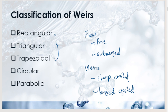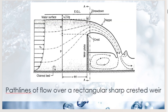Now let's discuss standard rectangular weirs without end contraction. The specifications include: (1) the upstream face of the weir plate must be vertical and smooth; (2) the crest edge shall be level with a square upstream corner and narrow enough so water doesn't touch it again after the upstream corner; (3) the sides of the flume shall be vertical, smooth, and extend downstream past the weir crest.